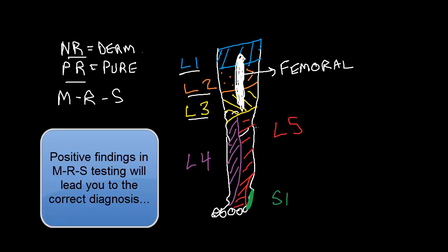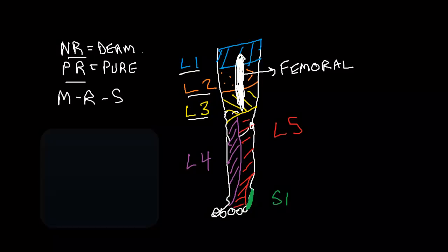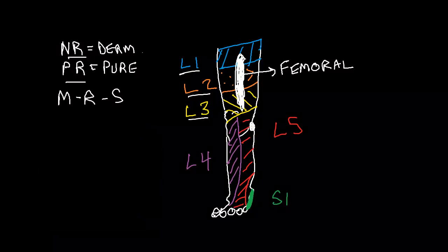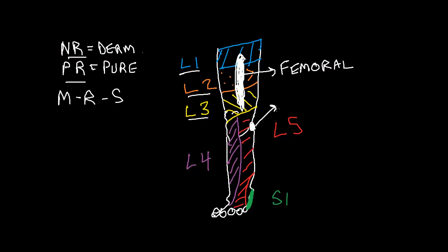Another peripheral nerve has a pure patch right over the head of the fibula, and this is the pure patch for the common peroneal nerve. So if the patient had sensory loss over this area right over the head of the fibula, I would do the MRS for the common peroneal nerve and the MRS for L5.